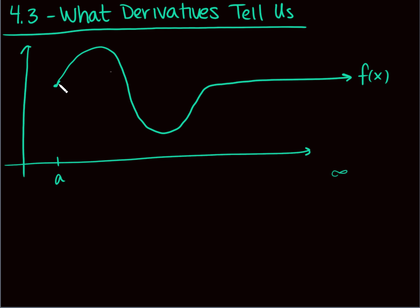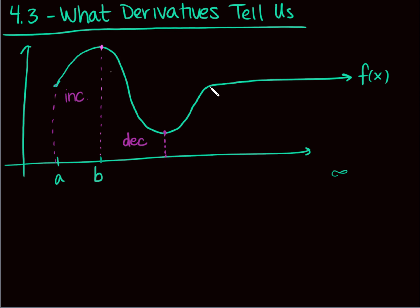Starting at a, what is happening to my y values as I'm going from a until about point b? My function is increasing — the y values are getting bigger. Then what happens? We start decreasing — my values get smaller and smaller until about this point. Then we start increasing again until about here, and then we stay constant from here on out.